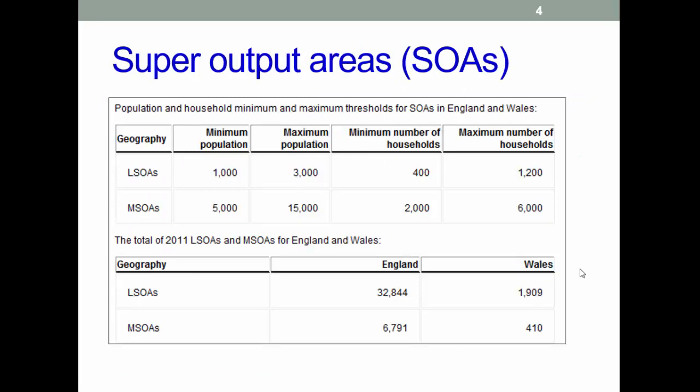Here's a summary of the difference between low super output areas and middle super output areas — we'll have a look at these on a map in a moment. It's important to note that they are based on population, not area, so they can vary quite a lot in size. Imagine a super output area in the middle of a town would be quite small, whereas one across North Yorkshire Moors would be very much bigger because fewer people live there.